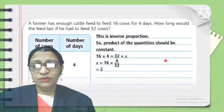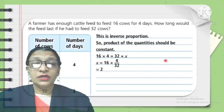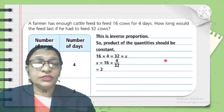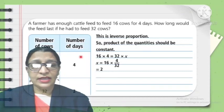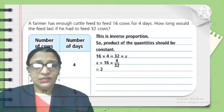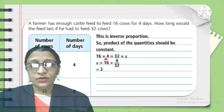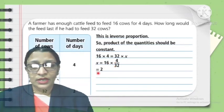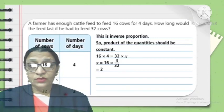A farmer has enough cattle feed for 16 cows for 4 days. How long will the feed last if he has 32 cows? Taking number of cows as X and number of days as Y: 16×4 = 32×X (inverse proportion). Solving: X = (16×4) ÷ 32 = 2. So if there are 32 cows, the food is enough for only 2 days.